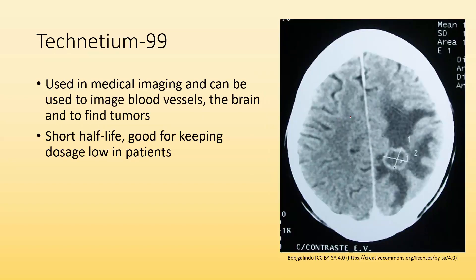Technetium-99 is used in medical imaging and can be used to image blood vessels, the brain, and it can also be helped to find tumors. It's got a short half-life, which is good for keeping dosage low in patients. So you give them this radioactive stuff, will help image and find the tumor in the blood vessels, but you don't have to worry about it sticking around in the patient too long because it's got a very short half-life.